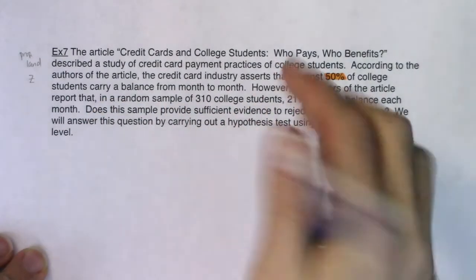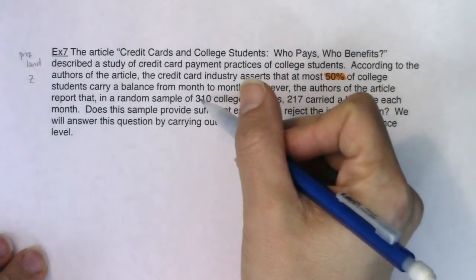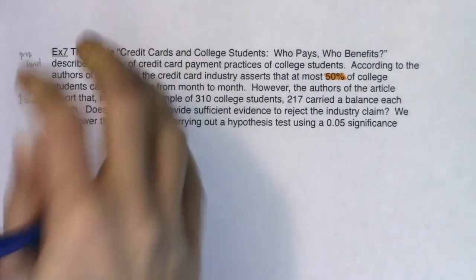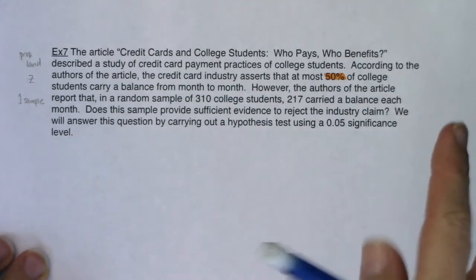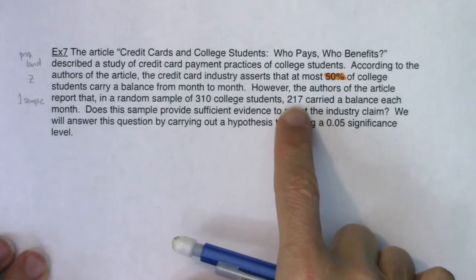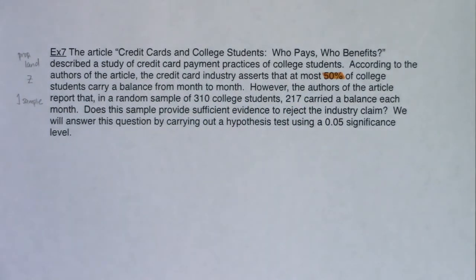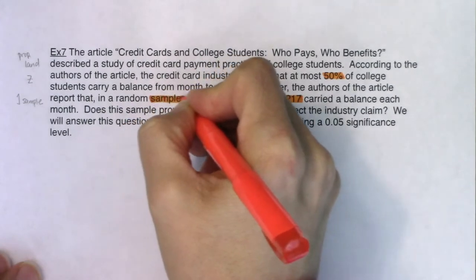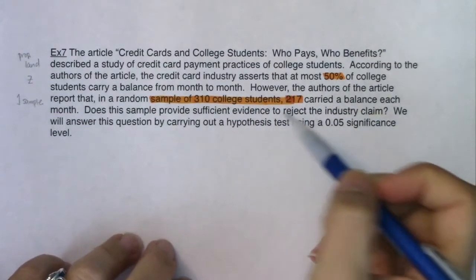You only took one sample of 310 college students. There are always two proportions: one is 50% and the other is 217 out of 310. Let me calculate the sample proportion — p-prime equals 217 ÷ 310, which is about 70%. So we've got 70% and 50%. The 50% was the parameter — the claim about all students from the credit card industry. Our sample proportion — the statistic — is 70%.